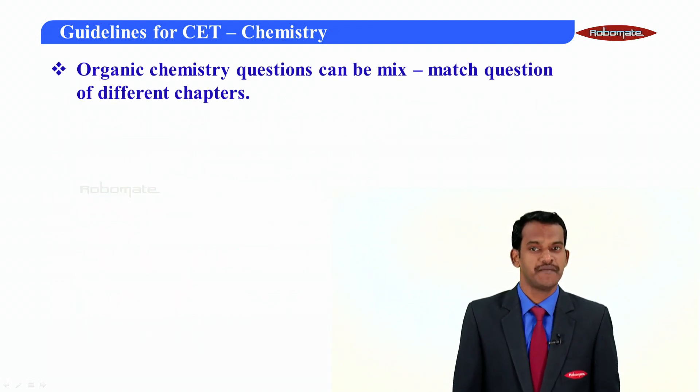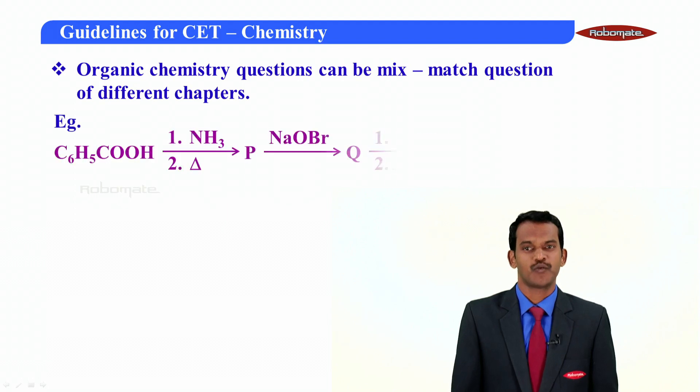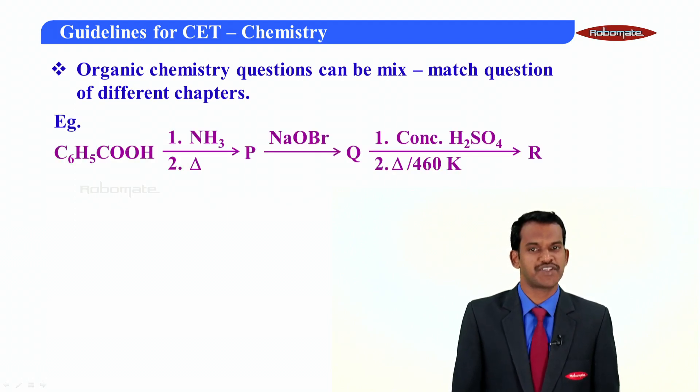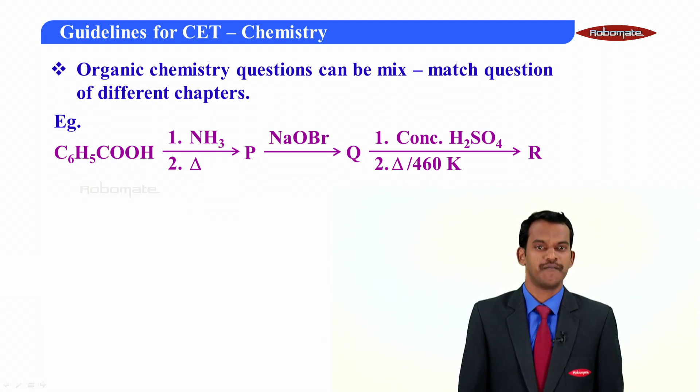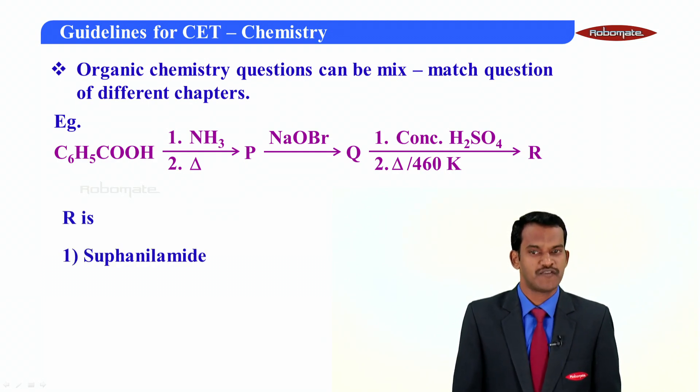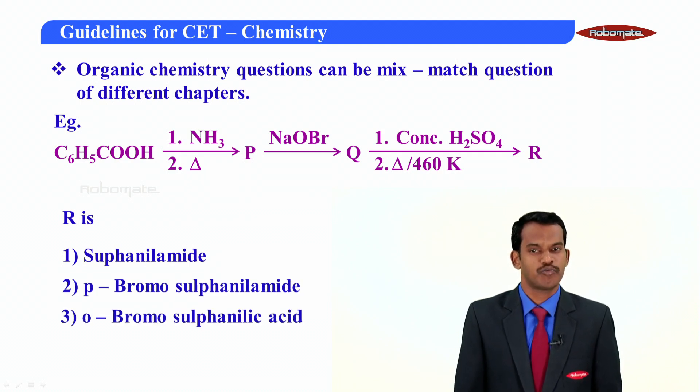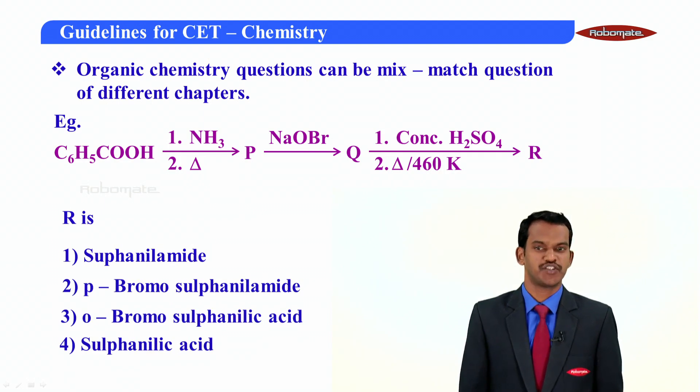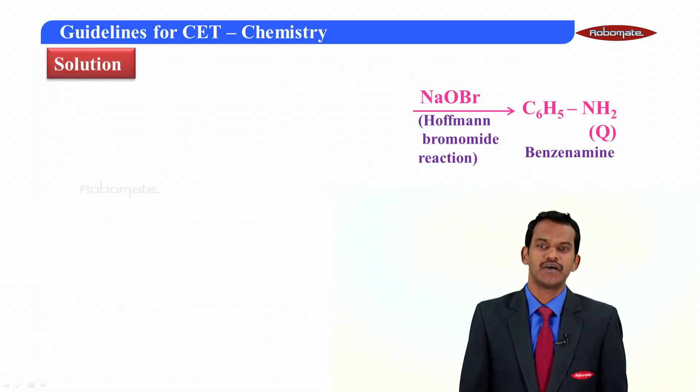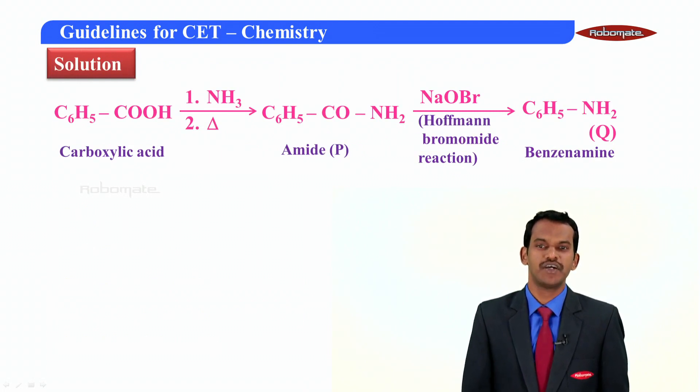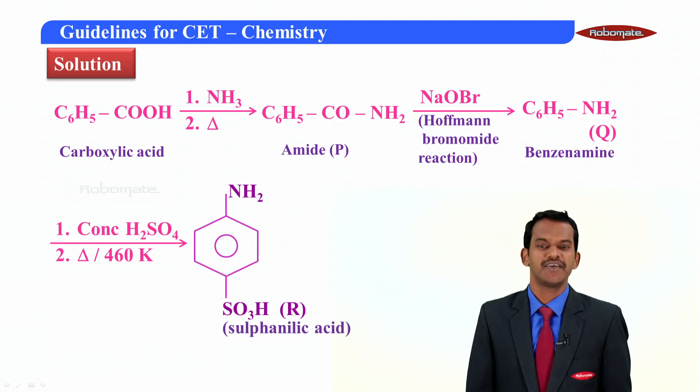Coming to the organic chemistry specifically, organic chemistry questions can be of a mix match question of different chapters. Let us have an example here. One of the equations like C6H5COOH in the presence of NH3 and heating gives P. In the presence of NaOBr gives Q, and that Q in the presence of concentrated H2SO4 at a temperature of 460 Kelvin gives R. And the question here is what is R? The options may be sulphanilamide, para-bromo sulphanilamide, ortho-bromo sulphanilic acid, and sulphanilic acid. If you look at this question, it's a combination of different chapters and this can be solved by knowing the reactions in different ways from different topics. Students, have a look at the equation here and the equation continues in this pattern, finally forming sulphanilic acid. And the answer for the given question R is sulphanilic acid, so the right answer becomes option 4.